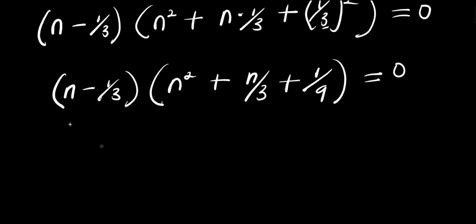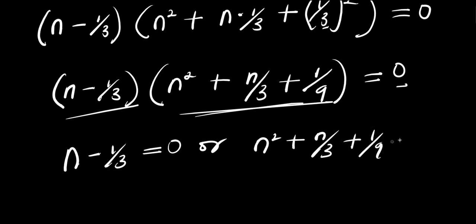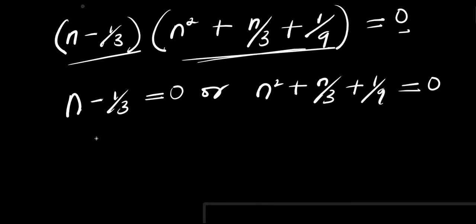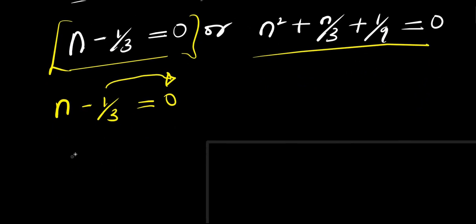From here we can equate each bracket to 0. The first one: n minus 1 over 3 equals 0. That means n equals 1 over 3. This is our first solution, n₁.